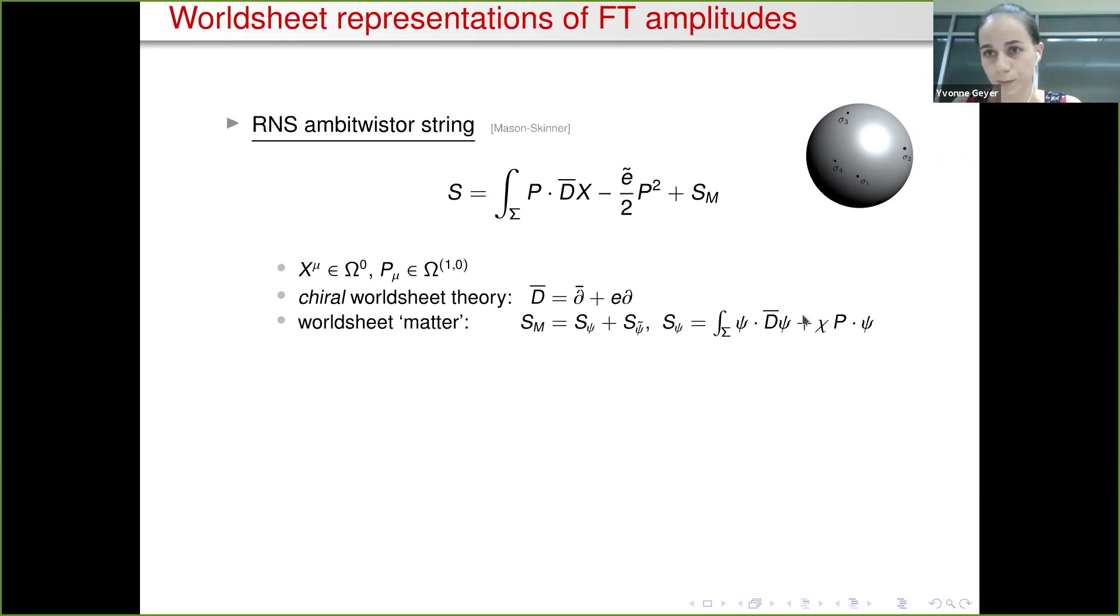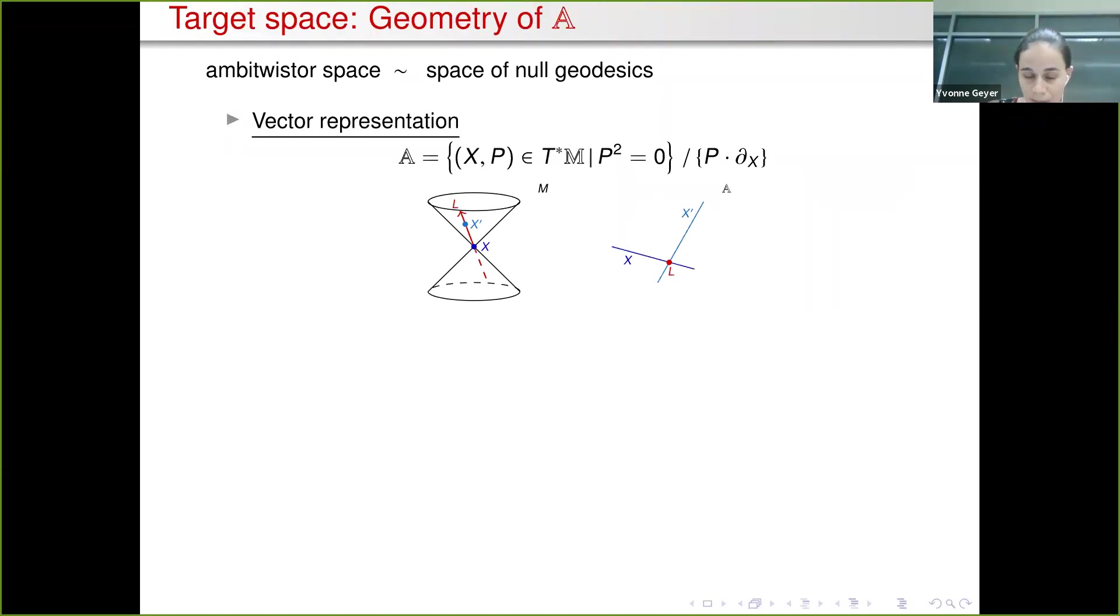Why do we call this an ambitwister string? If we focus on just the bosonic piece that I've spelled out explicitly, we can see that it maps naturally into the cotangent bundle with P and X spacetime indices indicated here. We have this additional Lagrange multiplier constraint e tilde over 2 P squared that tells us we're putting P squared equals zero. After quantization we're also quotienting by P dot dX. That tells us the target space instead of being the cotangent space is more properly the space of null geodesics. This massively simplifies descriptions of massless field theories.